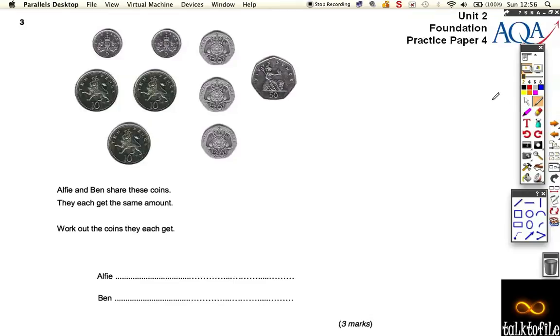Okay, question 3 on this practice paper number 4. It says that Alf and Ben share these coins and they get the same amount each. Work out the coins they get.